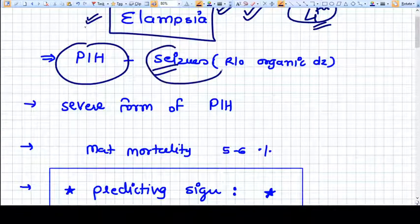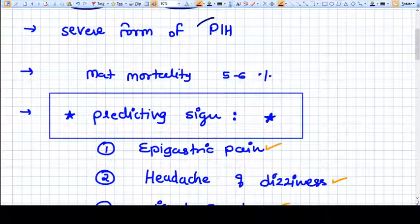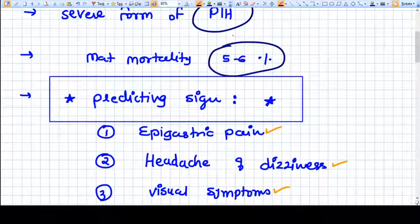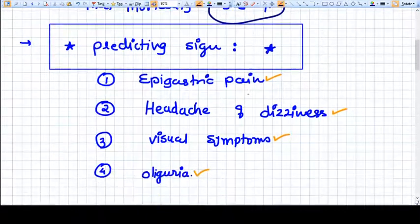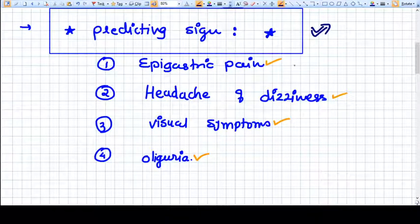It is a severe form of PIH. Maternal mortality rates reach up to five to six percent. There are some predicting signs when seen we have to act very rapidly to prevent the eclampsia.